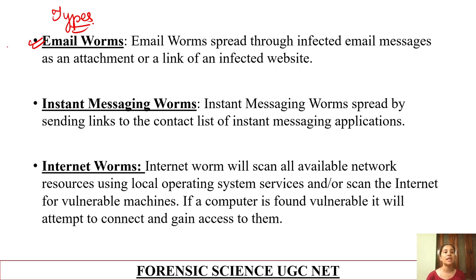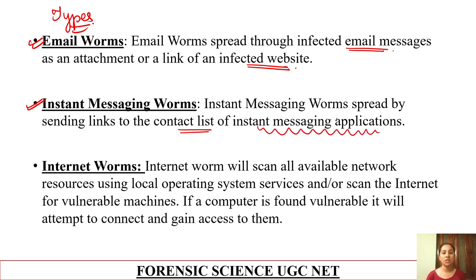Types of worms: first is email worm. Email worms spread through infected email messages as an attachment or a link to an infected website. Next is instant messaging worms — they spread by sending links through the contact list of instant messaging applications such as WhatsApp or Telegram. If you receive such a link or coupon, do not click it. These are instant messaging worms spread from instant messaging applications.